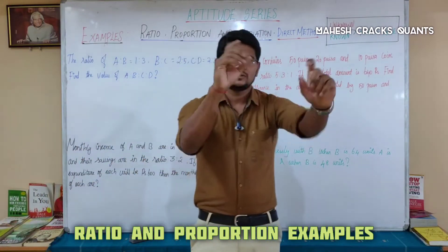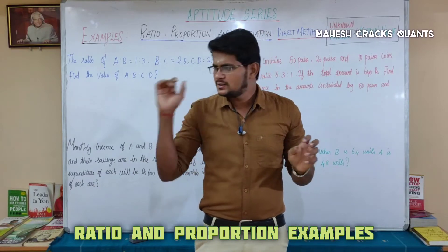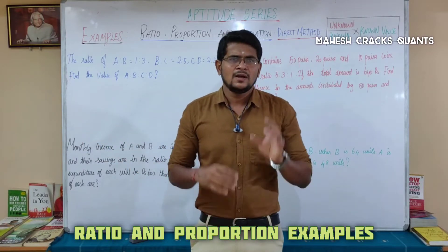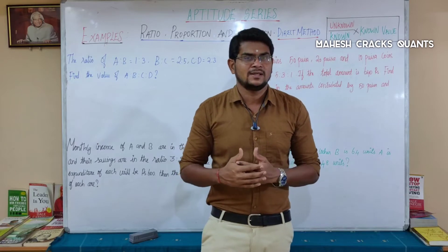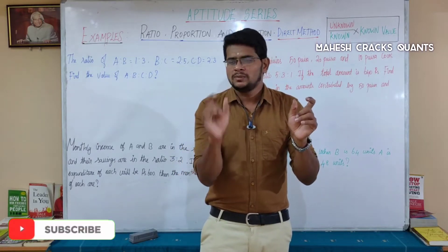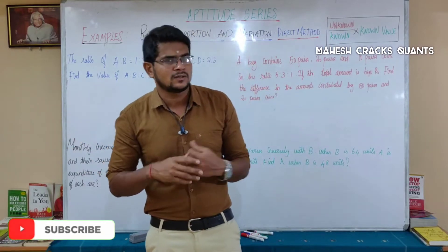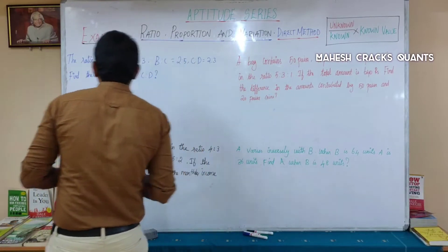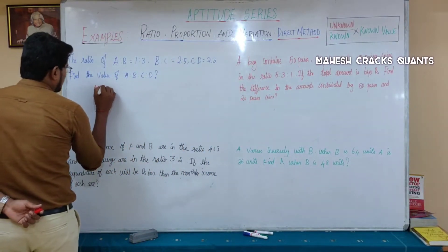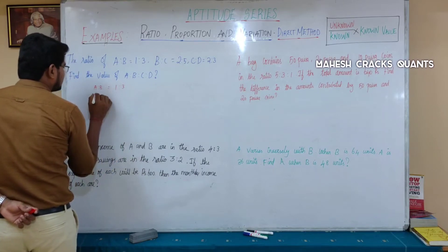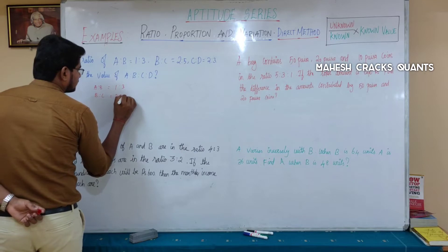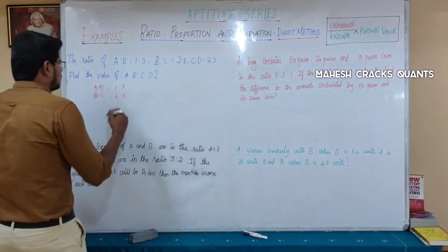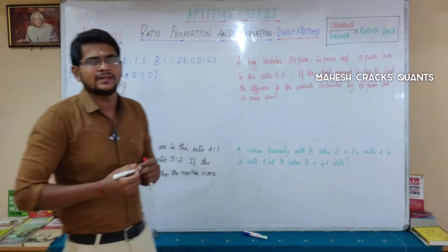So if you have two different values — a to b, b to c, and c to d — and you need to find a to b to c to d, you use the basics method. When converting a:b and b:c together, the common element is b. So we need to make b equal in both ratios. The b values are 3 and 2 — we find the LCM.